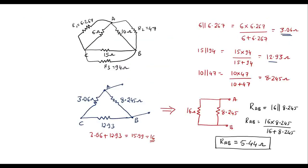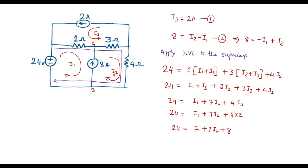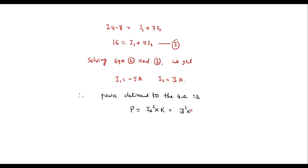After finding I1 and I2, the question is to find the power delivered to the 4 ohm resistor. In this circuit, through the 4 ohm resistor, current I2 is flowing. Therefore, power delivered to the 4 ohm resistor is P equals I2 squared into R. I2 value is 3, so 3 squared into 4 ohms equals 9 into 4, which is equal to 36 watts. Therefore, power delivered to the 4 ohm resistor is equal to 36 watts.